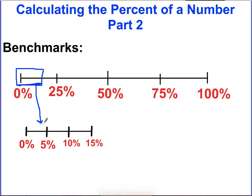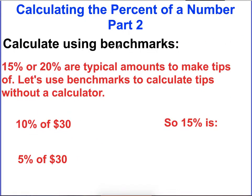The ones that we're going to be looking at today are between 0 and 15%, specifically 10%, which should be easy to calculate. From 10% we can also get to 5, and then if we add whatever values we got for 10 and 5, we should get 15%. So the reason that we're going to do this is because 15% and 20% are typical amounts to make tips of. So if you're at a restaurant, or you're somewhere where you would normally tip somebody, they're good percents to know how to do mentally. So we're going to use benchmarks to calculate these without a calculator.